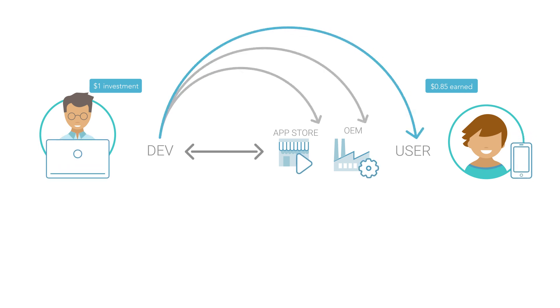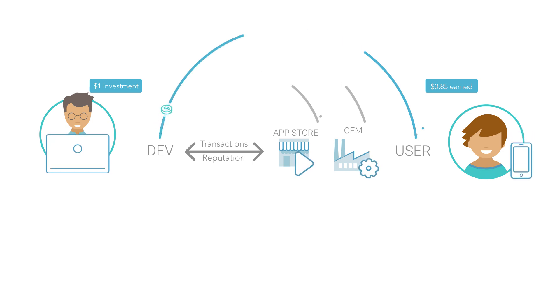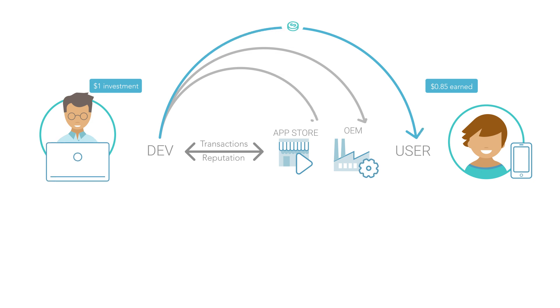Furthermore, with the AppCoins protocol, the reputation of app developers comes from their transactional history across stores. All information is stored on the blockchain, making app approval automated across app stores.